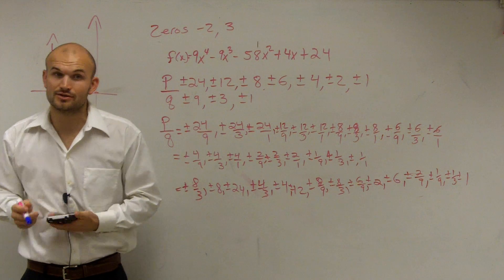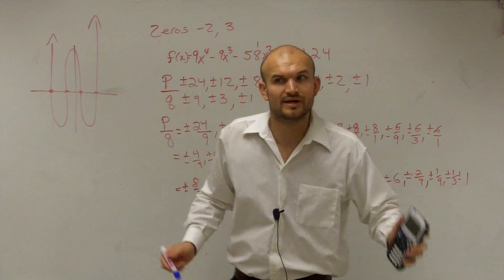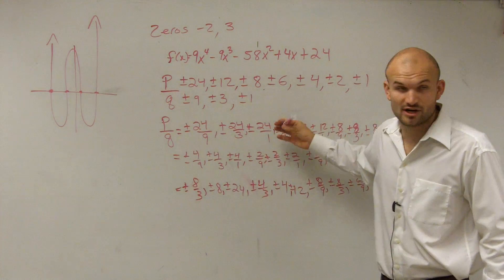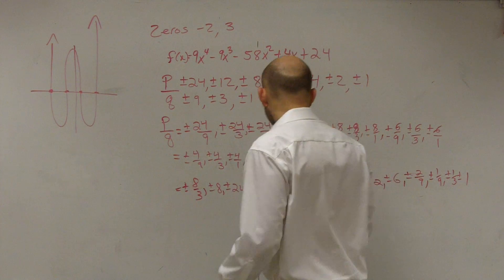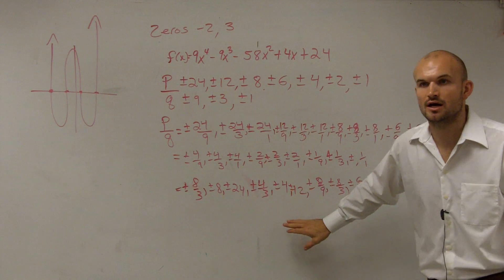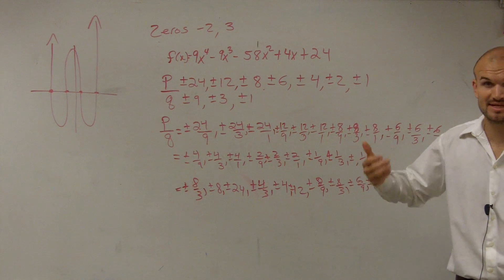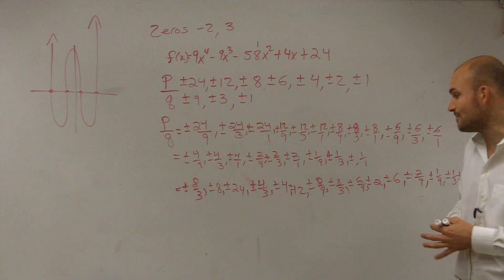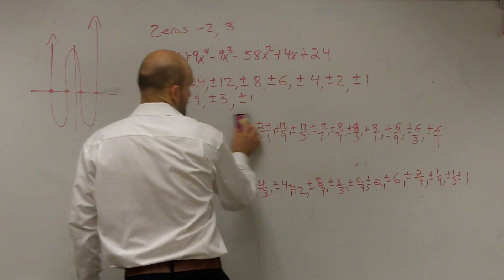So it looks like those are my zeros. I don't know for sure. I can go and use the zero function on my calculator to verify. But what I want to do is, to show my work, I'm going to verify using synthetic division. So first of all, are negative 2 and positive 3 possible zeros of this function? Yes, they are. So that's good. That means at least that's why we do the rational zero test, to make sure they're even possible for us to use.